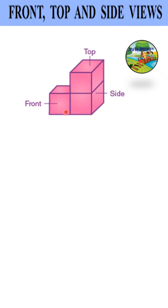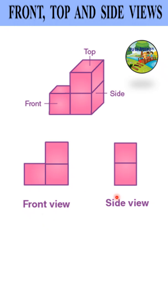For this given solid shape, this is the front, side and the top view. You can draw neatly in your books using a ruler and a pencil. This is the front view, side view and top view of the given solid shape.